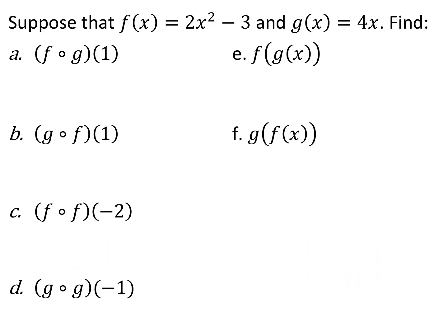We are given f of x equals 2x squared minus 3, and g of x equals 4x. We want to find the following. This first one says f composed with g of 1. Whenever I see this, I always rewrite it in the other form, as f of g of 1, because it tells us more about what we want to do.